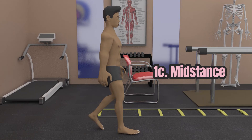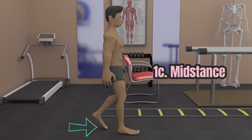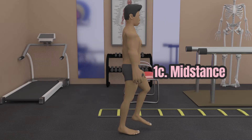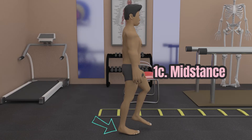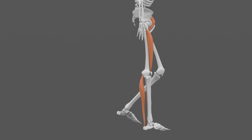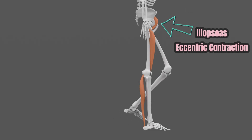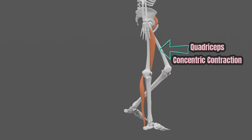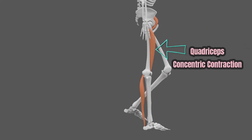After the loading response, there is mid stance, which starts when the opposite toe comes off the ground and ends when the heel comes off the ground of the lead leg. To allow smooth and controlled hip extension to neutral zone, there is iliopsoas eccentric or lengthening contraction. The quadriceps performs a concentric or shortening contraction to prevent the knee from buckling as it accepts the body's full weight.